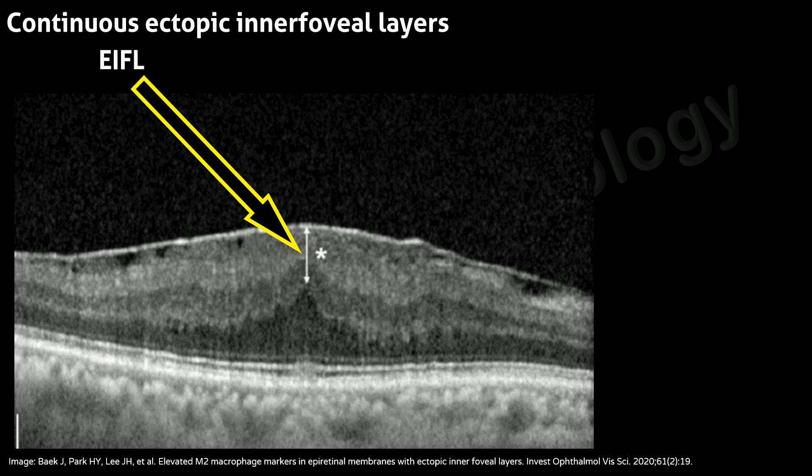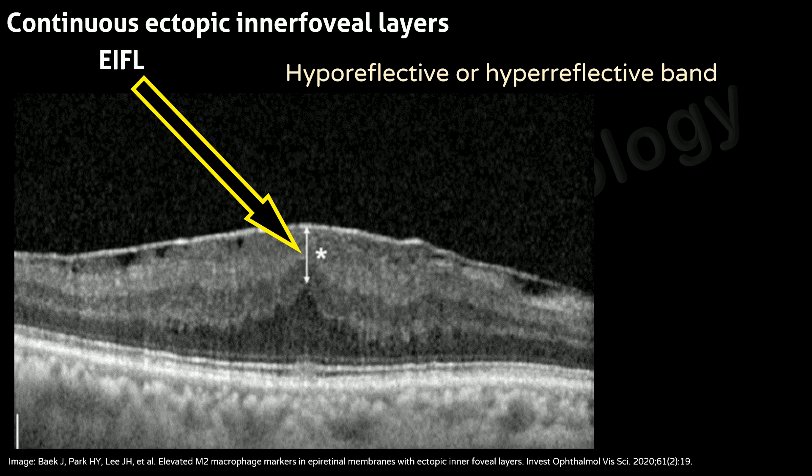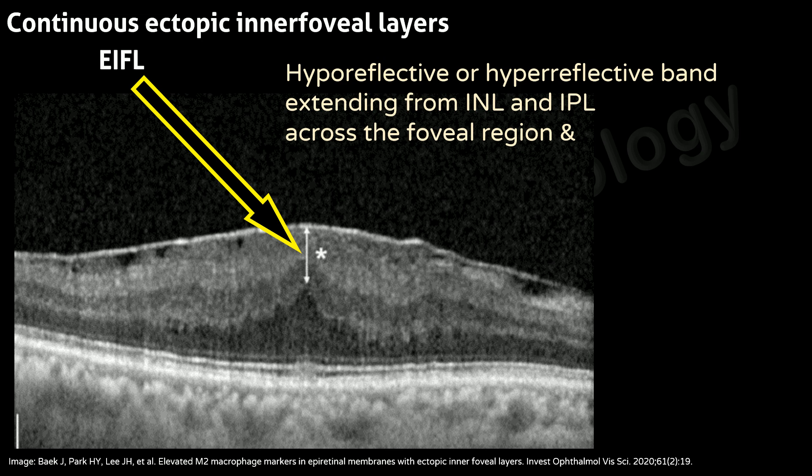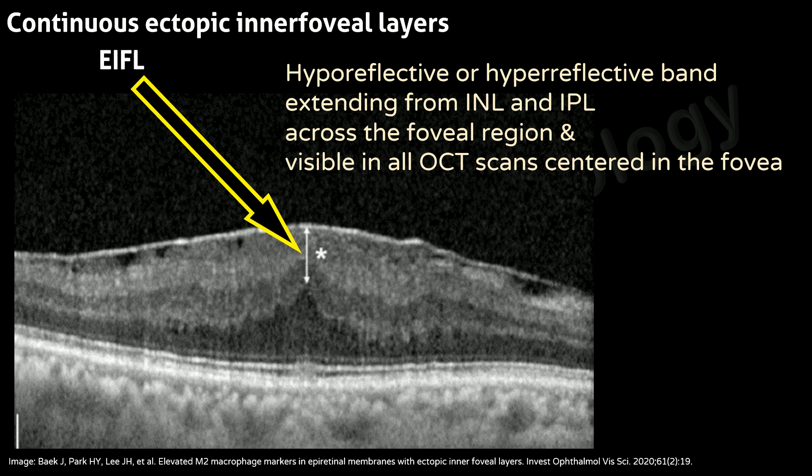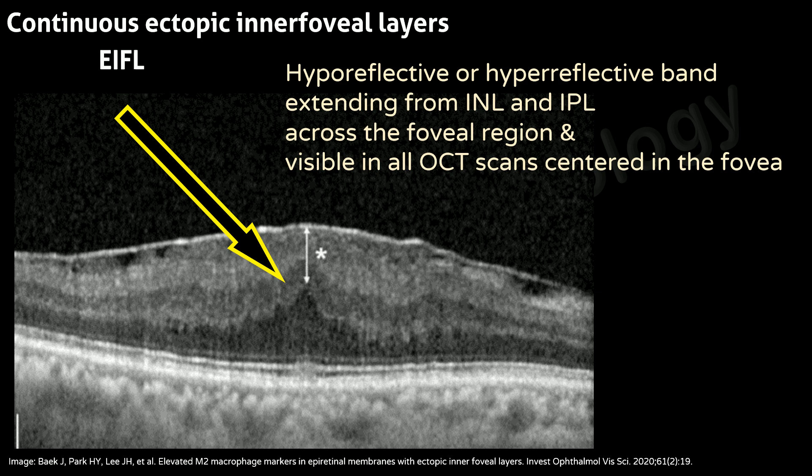IFIL is defined as a hyporeflective or hyperreflective band extending from the inner nuclear and inner plexiform layers across the foveal region, and visible in all OCT scans centered in the fovea. Here you can see the extension from the inner nuclear to the inner plexiform layer.